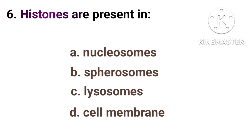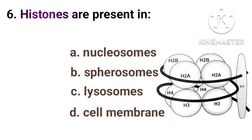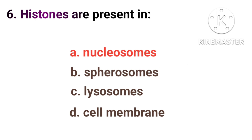Histones are present in: Option A, nucleosomes. Option B, spirosomes. Option C, lysosomes. Option D, cell membrane. Histones are found in complexes called nucleosomes. Each nucleosome is comprised of 8 histones, usually 2 copies of H2A, H2B, H3, and H4. The correct answer is Option A, nucleosomes.